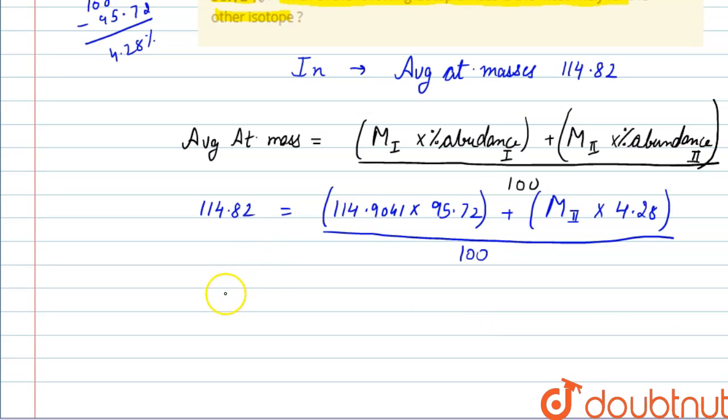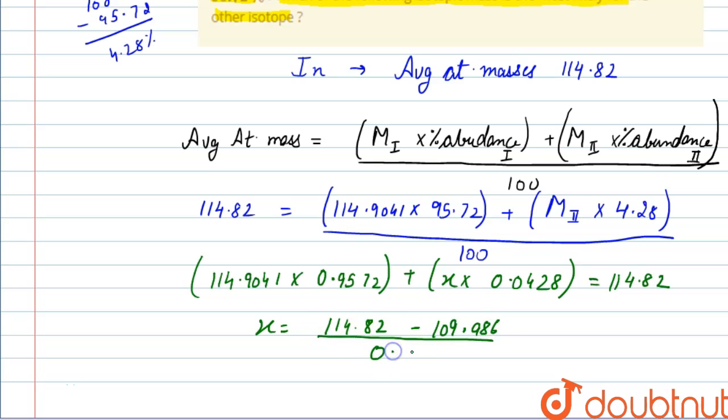Now it will be 114.9041 into 0.9572, dividing by 100, plus x (let the mass be x) into 0.0428, which will equal 114.82. The value of x will be 114.82 minus 109.986 divided by 0.0428.